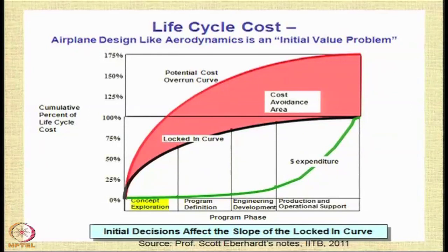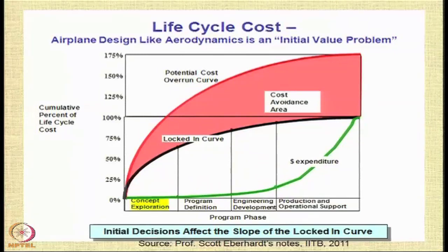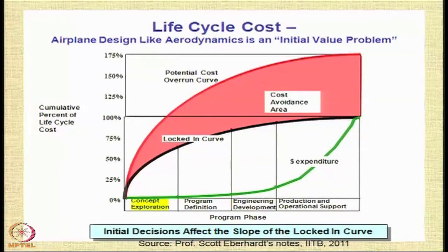Let us see how life cycle cost plays an important role in aircraft design. This is an interesting chart borrowed from Professor Scott Eberhardt's notes. On the x-axis are the various phases of the aircraft development program: the concept exploration phase, program definition phase, engineering development phase, and production and operation. On the y-axis is the cumulative percentage of the life cycle cost, with 100 percent reached at the end of the production and operational support phase.